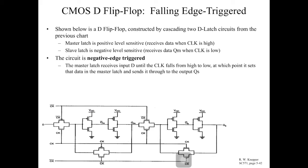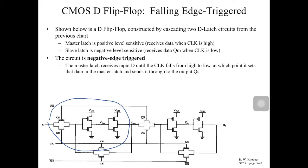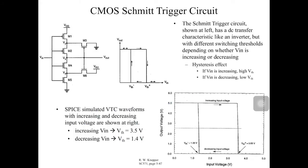For a negative edge D flip-flop, the master latch receives the input D until the clock falls from high to low, at which point it sets the data in the master latch and sends it to the output Q. This master-slave structure consists of two D flip-flop blocks connected back to back, and it is negative-edge triggered because the circuit is activated by clock and clock-bar in that configuration.